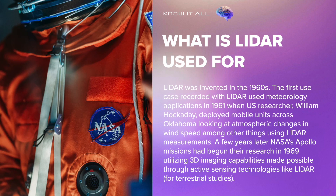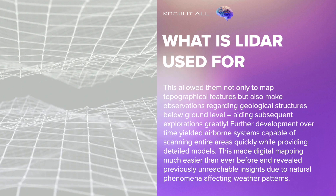LIDAR was invented in the 1960s. The first recorded use case of LIDAR used meteorology applications in 1961 when U.S. researcher William Hockaday deployed mobile units across Oklahoma, looking at atmospheric changes in wind speed among other things using LIDAR measurements. A few years later, NASA's Apollo missions began their research in 1969, utilizing 3D imaging capabilities made possible through active sensing technologies like LIDAR for terrestrial studies. This allowed them not only to map topographical features but also make observations regarding geological structures below ground level, aiding subsequent explorations greatly.